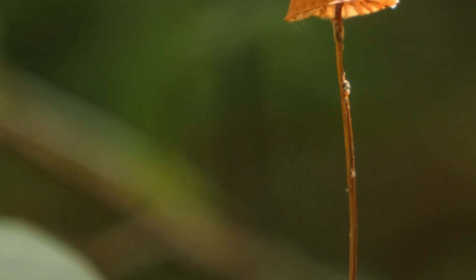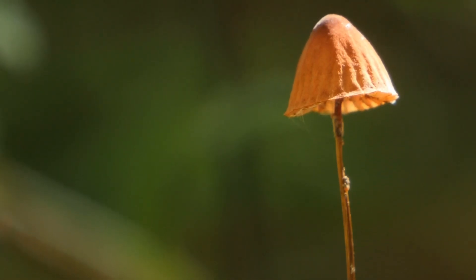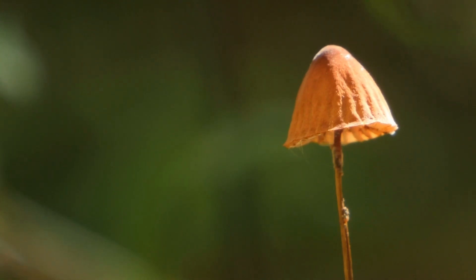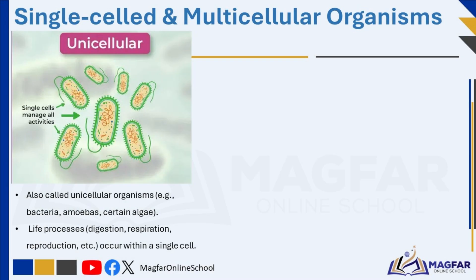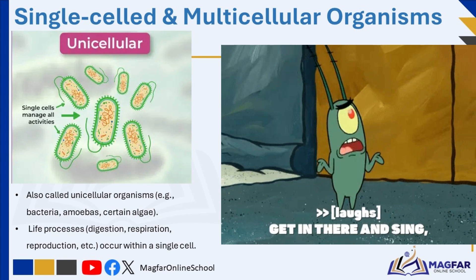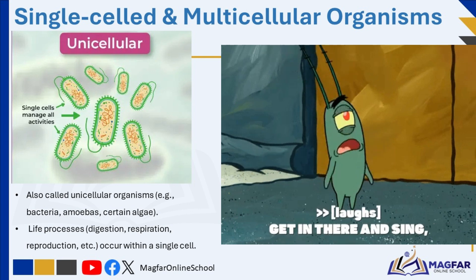Living organisms can be classified into two main types based on the number of cells they are made of: single-celled, or unicellular, and multicellular organisms. Cells are the basic building blocks of life, and they carry out essential functions that sustain an organism. While some organisms consist of only one cell, others are made up of many cells that work together in a coordinated way. Single-celled organisms, also known as unicellular organisms, consist of just one cell. Examples include microscopic organisms such as bacteria, amoebas, and certain types of algae.